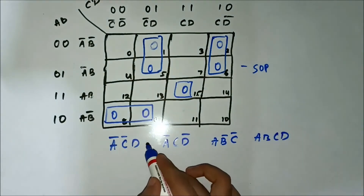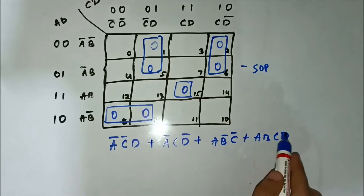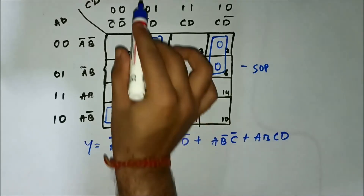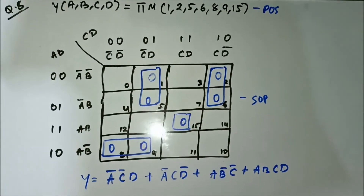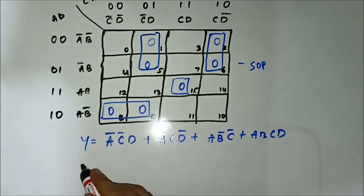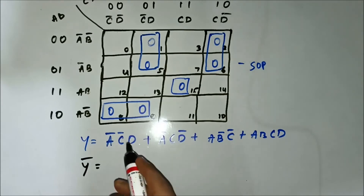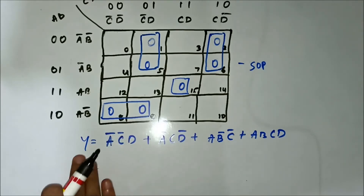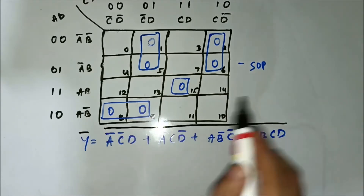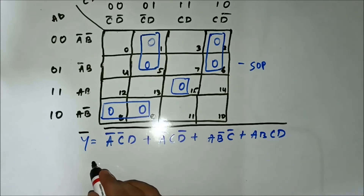This gives us the SOP expression — the simplified expression which is in SOP form. But the question is given in terms of POS, so we have to find the simplified expression in POS form. Simply, we will take the complement — applying De Morgan's theorem.